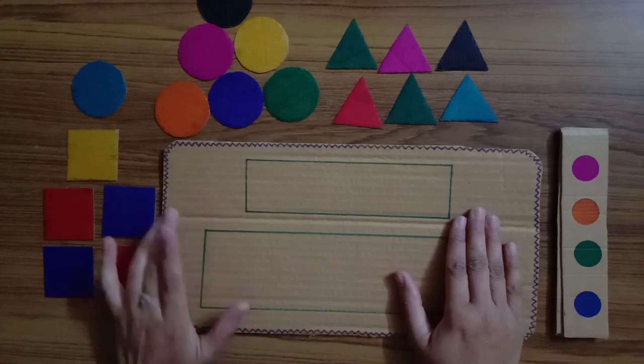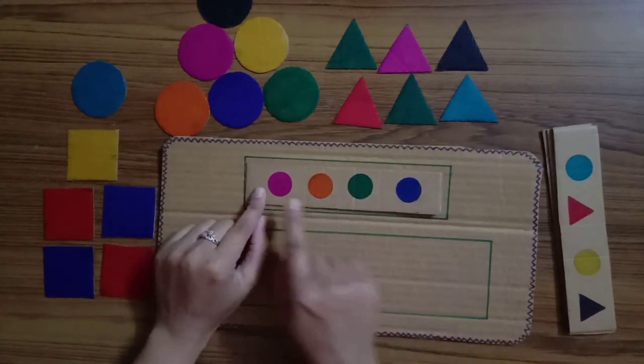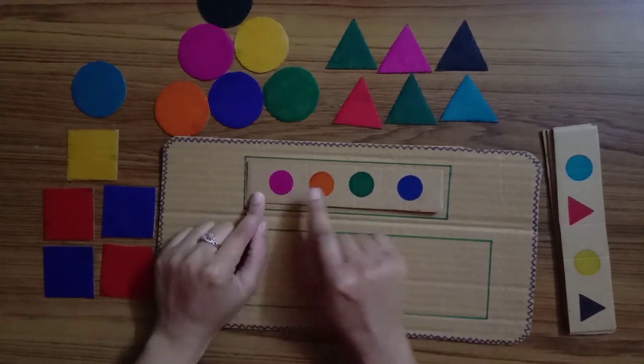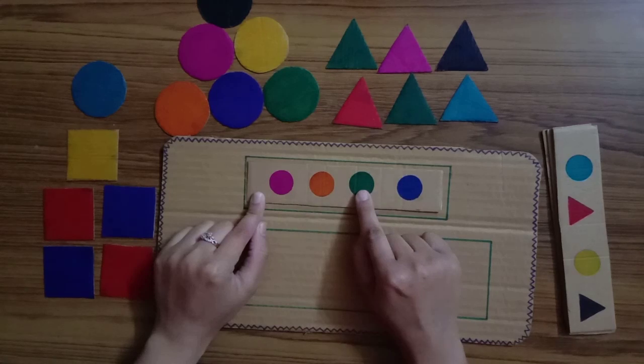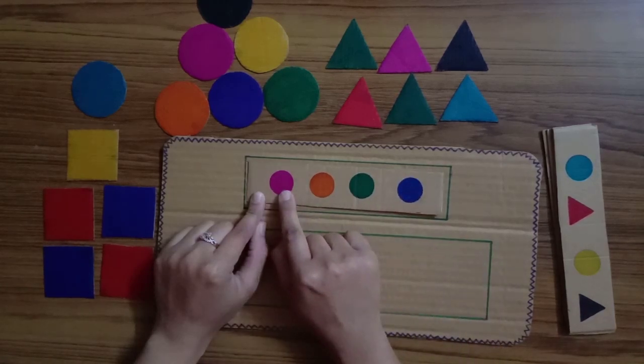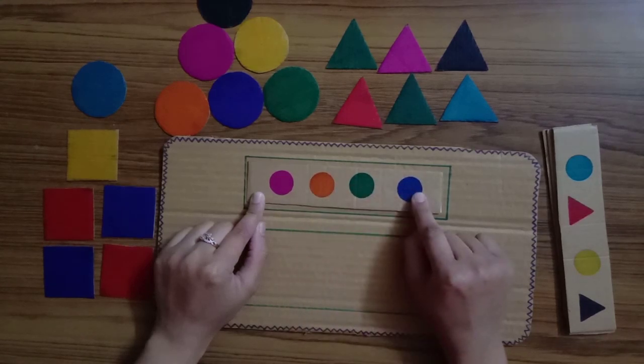Take your first card, put it here, and then ask the child to read all the colors and shapes aloud. For example: pink circle, orange circle, green circle, and a blue circle. Ask the child to repeat this: pink circle, orange circle, green circle, and a blue circle.